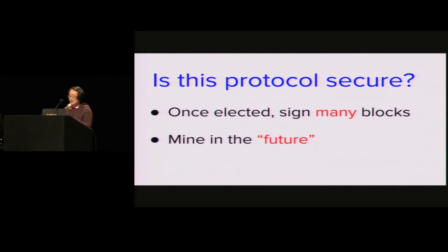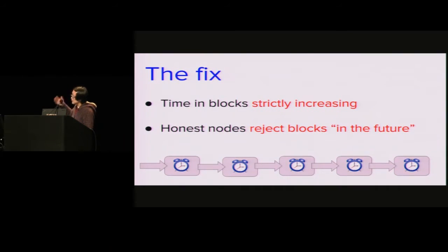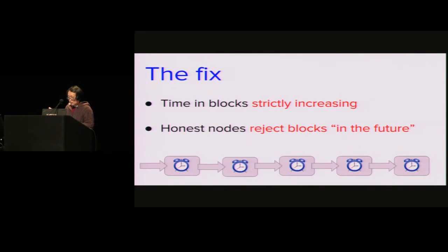This seems like a very natural idea, but it turns out this protocol actually doesn't work. The adversary has a lot of advantage: when the honest nodes get elected, they sign exactly one block, but when the adversary gets elected, it can sign many blocks. Also, honest nodes only mine in the present, taking the current time step, whereas the adversary can pick future time steps and hash as many times as it wants. To make the protocol secure, we constrain the adversary: timestamps in blocks must strictly increase, and honest nodes will reject any blockchain where a block has a future timestamp. With these fixes, the adversary can't sign many blocks when elected, and can't use future timestamps.